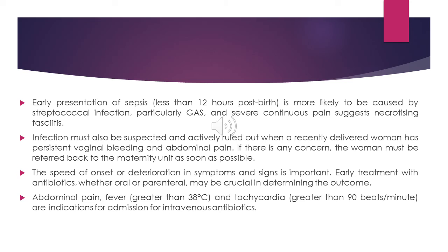Certain clues in history and examination help manage sepsis. Early presentation less than 12 hours post-partum is more likely caused by streptococcal infection, particularly group A streptococcus. Severe continuous pain suggests necrotizing fasciitis. Infection must be suspected and actively ruled out when a recently delivered woman has persistent vaginal bleeding and abdominal pain — she must be referred back to the maternity unit as soon as possible. The speed of onset or deterioration is important; early treatment with antibiotics, whether oral or parenteral, may be crucial in determining outcome.